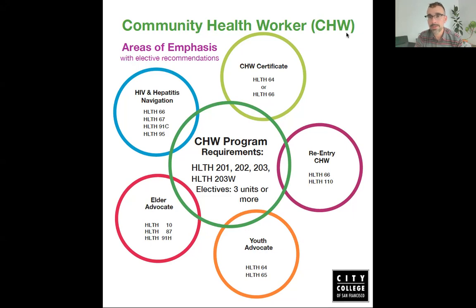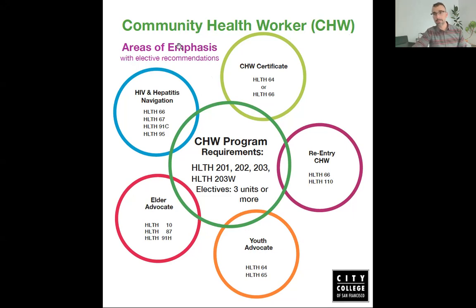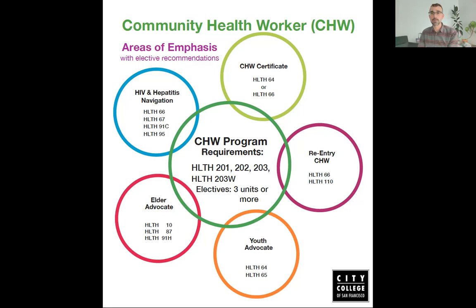Today I just want to do a brief overview of the certificate and give you an idea of the course sequencing. First off, we have a prerequisite course called Health 59: Introduction to the Community Health Worker Field. It's a one-unit course that's usually offered in the summer or late in the semester. City College of San Francisco runs on the fall and spring semester timeline and a summer session as well.